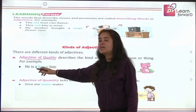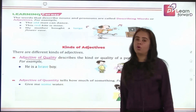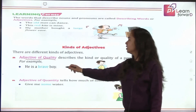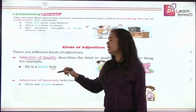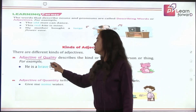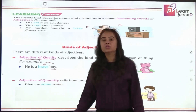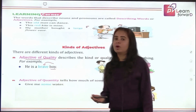For example, if we say 'He is a brave boy,' we are describing this boy — how is he, what is his quality? He is brave. So 'brave' is the adjective of quality.